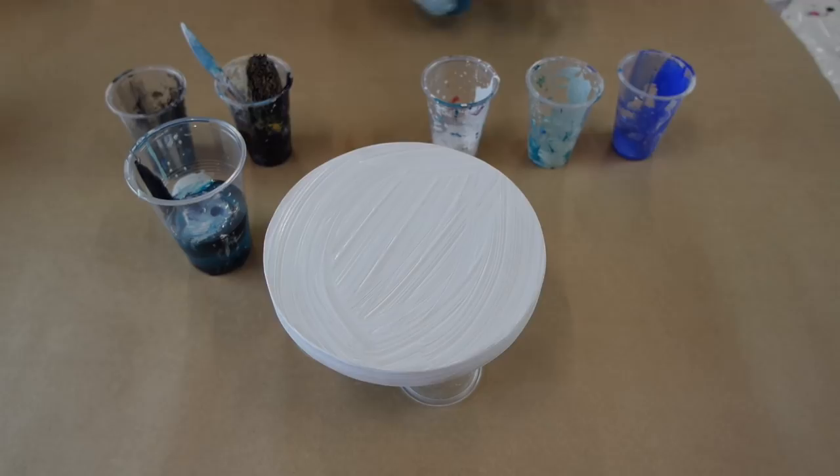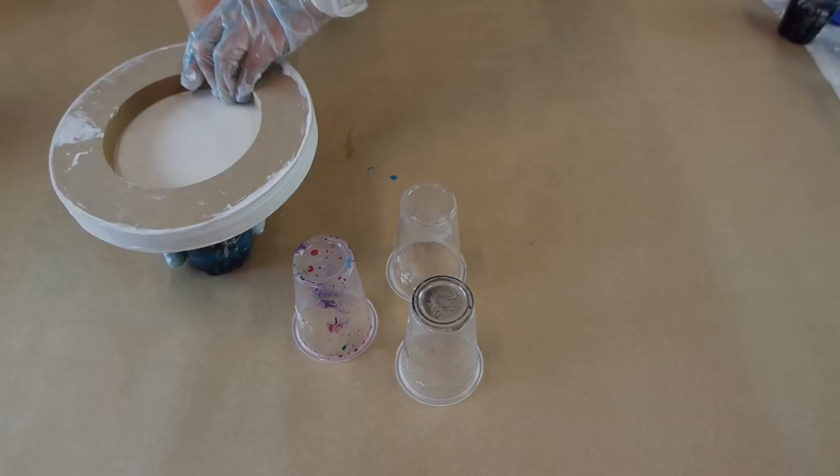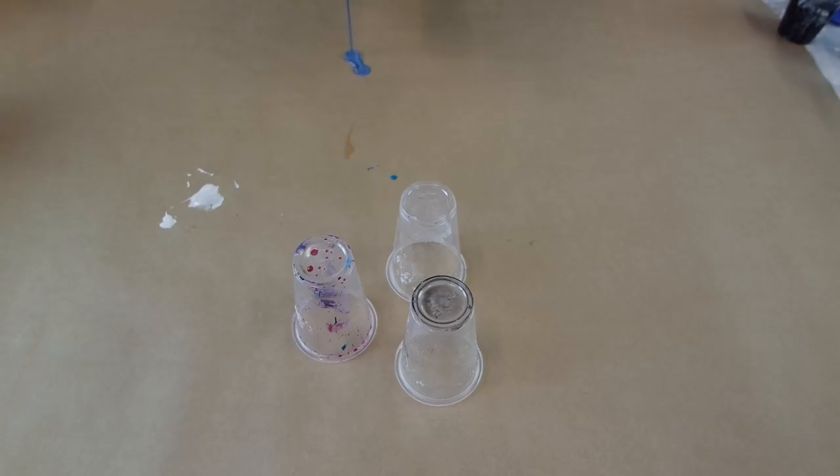Now I'm just placing the board on top of my cup and then flipping it over. This technique is called a dirty pour.